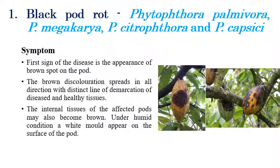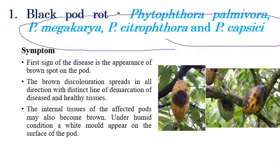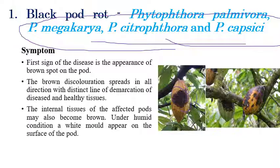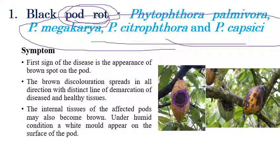The first disease is Black Pod rot, caused by different species of Phytophthora: P. palmivora, P. megakarya, P. citrophthora, and P. capsici. As the name indicates, pod regions turn black. Initially, small brown spots appear on the pods and slowly expand, eventually covering the entire pod with black discoloration. This disease is mainly seen in humid conditions, and white moldy growth can also be observed.